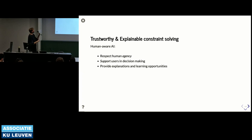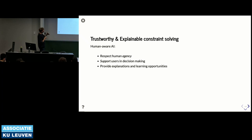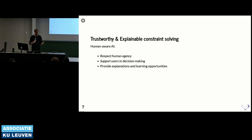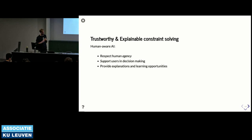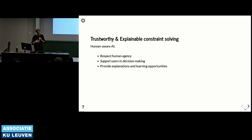A main idea within trustworthy and explainable AI in constraint solving is about making AI systems more human-aware. Human-aware means they respect human agency—the decisions a system proposes should be suggestions, and as humans we retain control to change some of those decisions. This means a focus towards support: using AI techniques to support users in decision making, with systems able to provide explanations and offer learning opportunities on both the user side and the system side.